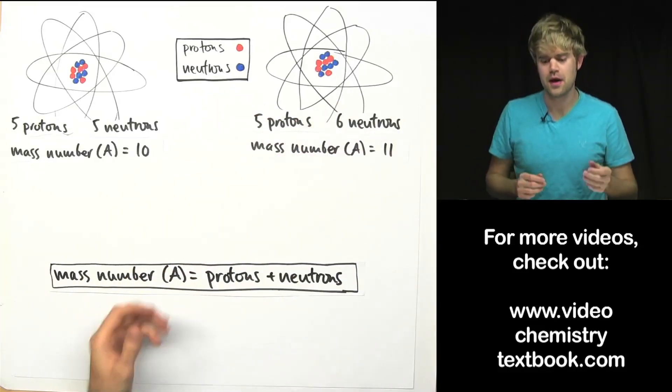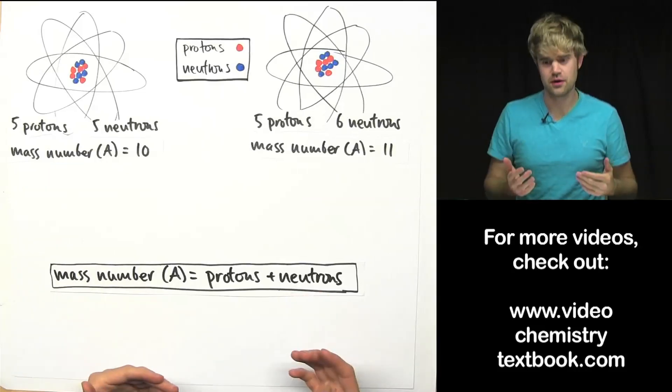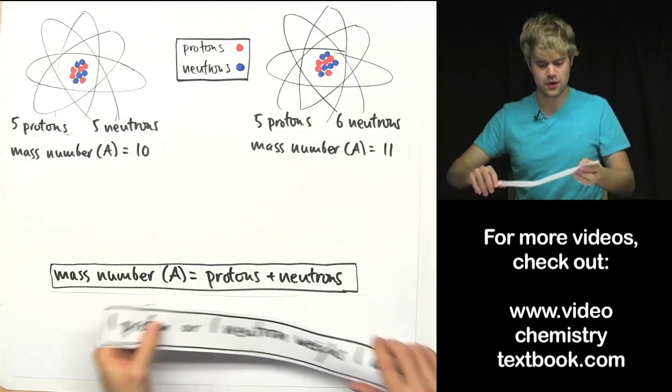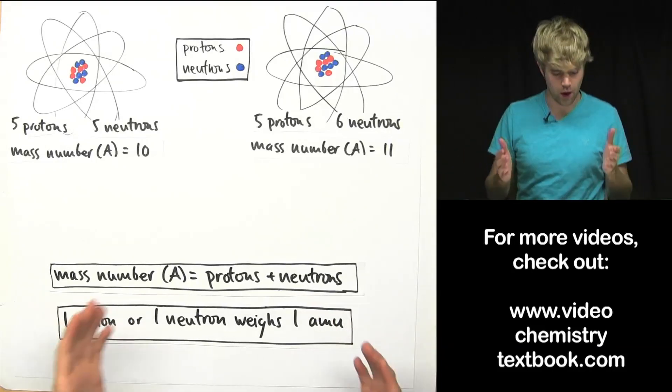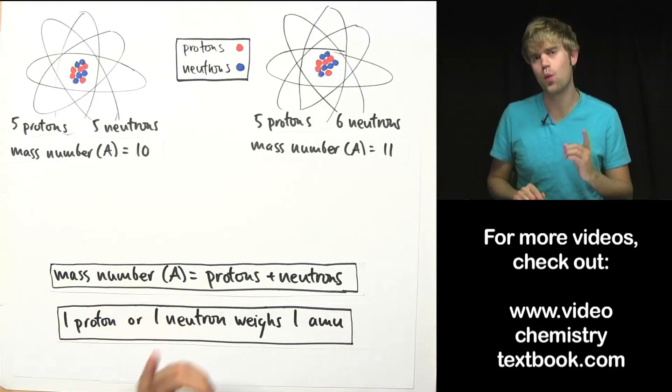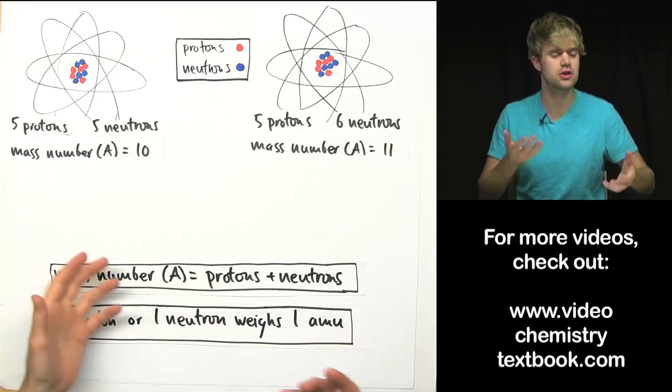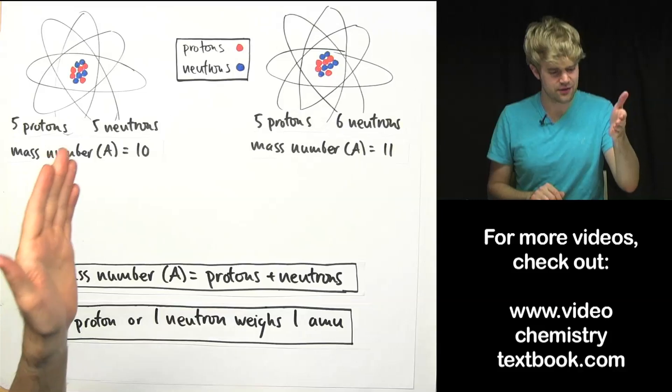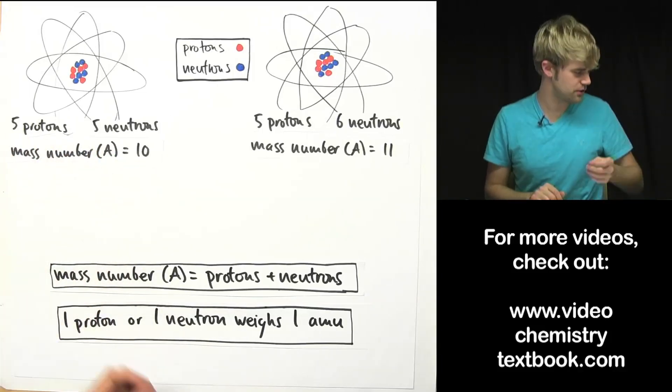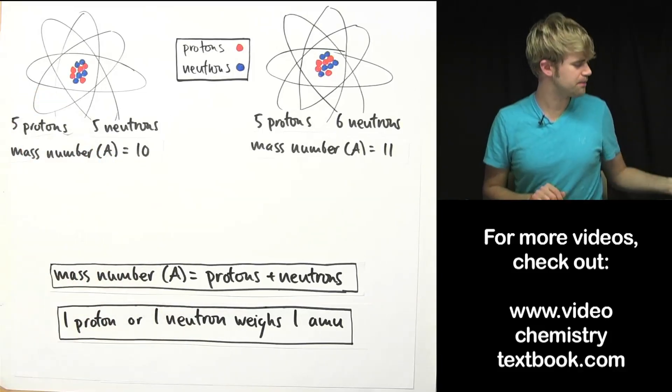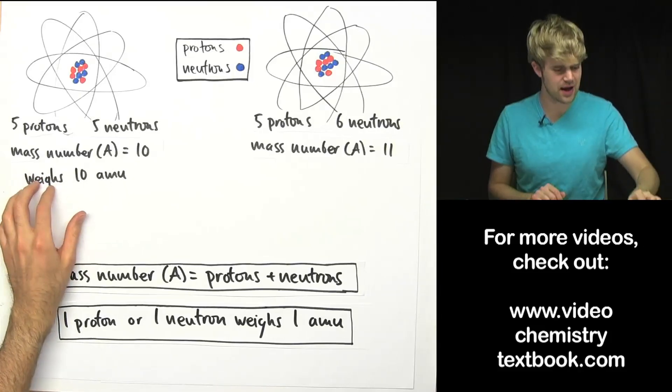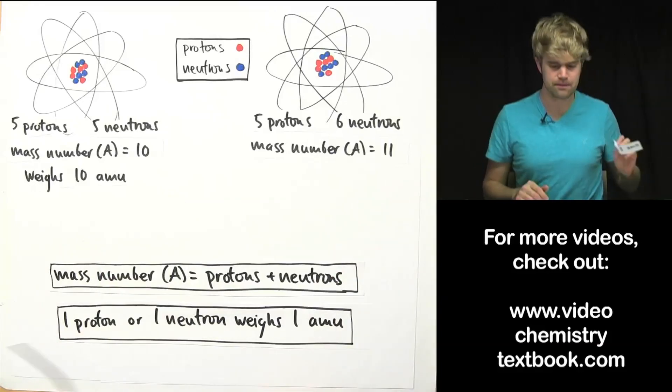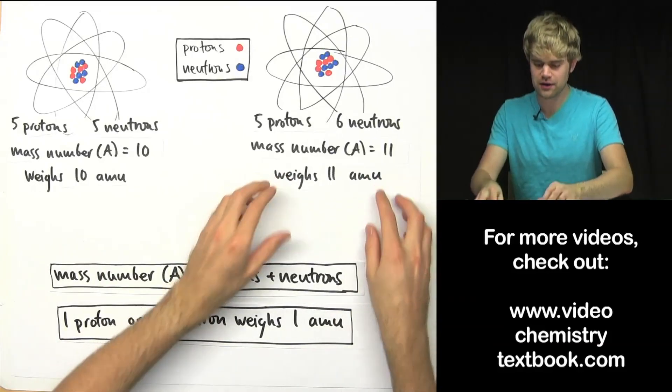Now the mass number also tells us a little bit about how much the atom actually weighs because it turns out that one proton or one neutron weighs just about 1 amu, one atomic mass unit. It's a unit that we can use to measure how much an atom weighs. So if we have 10 protons and neutrons over here with a mass number of 10, that means that this atom is going to weigh about 10 amu, 10 atomic mass units and our atom over here with a mass number of 11 is going to weigh about 11 amu.